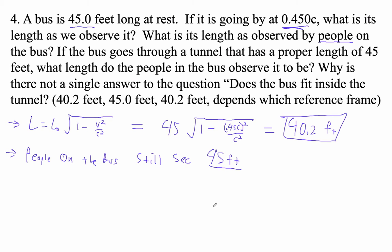Let's see. If the bus goes through a tunnel that has a proper length of 45 feet, what length do the people in the bus observe it to be? Well, the tunnel is 45 feet long, right? But the tunnel is moving past them at the same speed. And so the people are going to see the tunnel as exactly the same length.